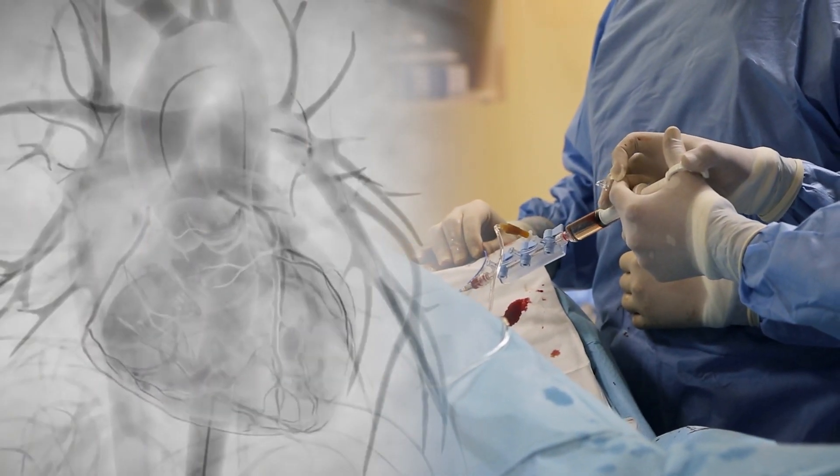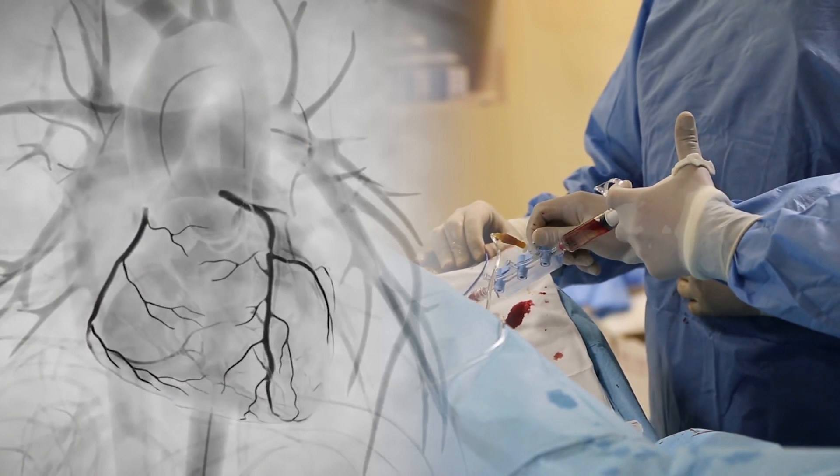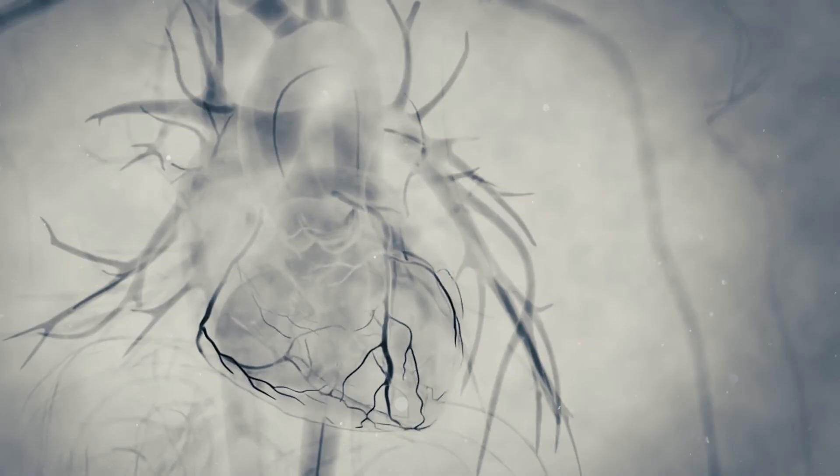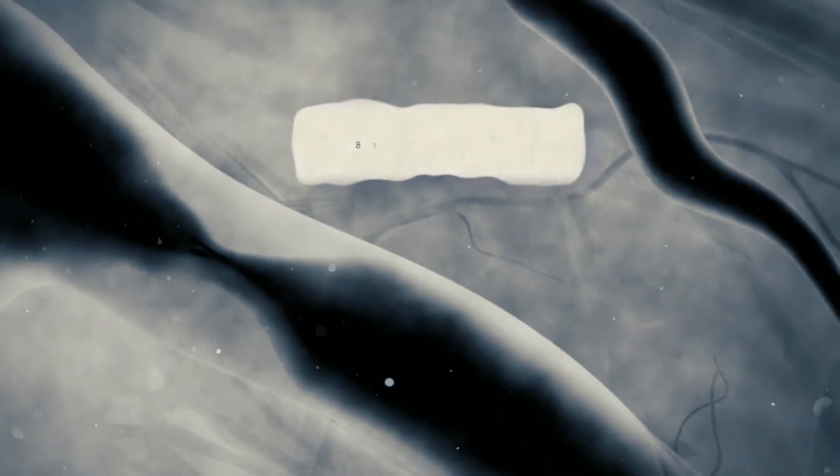Once the catheter is in place, your doctor will inject a liquid dye through the catheter. The dye makes the blood flowing inside the blood vessels visible on an x-ray and shows any narrowed or blocked areas in the blood vessels.